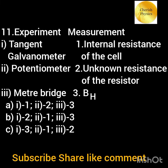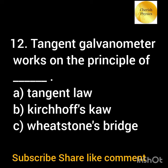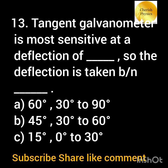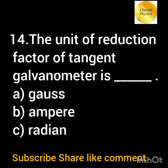Match the given experiment to what they measure. Tangent galvanometer works on the principle of dash. Tangent galvanometer is most sensitive at a deflection of dash, so the deflection is taken between dash. The unit of reduction factor of tangent galvanometer is dash.